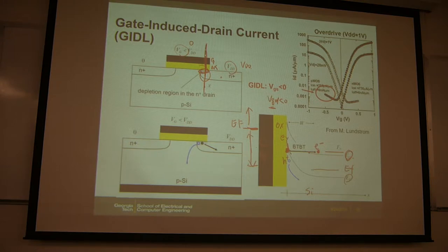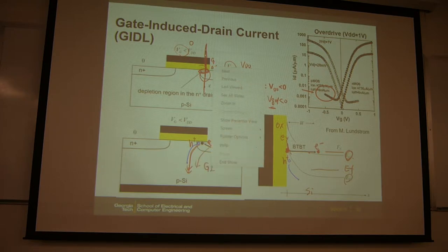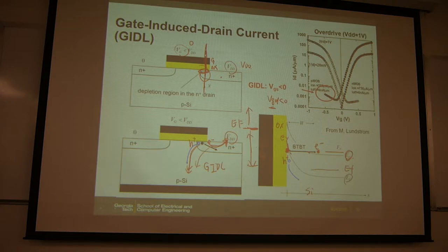This electron-hole pair: electrons will go to higher potential because your drain is VDD, so electrons flow there. Holes will go to lower potential, and if your substrate is ground, holes flow there. So essentially electron flow and hole flow means current — this is the GIDL current. You can see this kind of current in a typical ID-VG curve. This is ID versus VG in log scale.